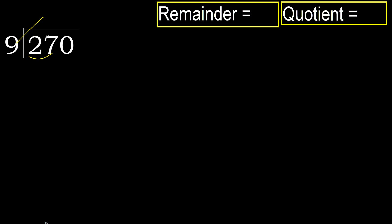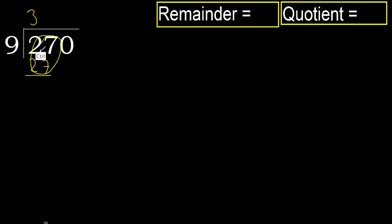But not greater. 9 multiplied by 4 is greater, so multiplied by 3 — 27 is not greater. OK, subtract.